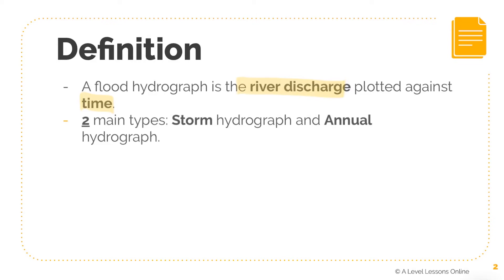There are two main types of hydrographs. First, you have the storm hydrograph, and second, the annual hydrograph. The storm hydrograph is a short-run hydrograph, while the annual hydrograph is a long-run hydrograph.